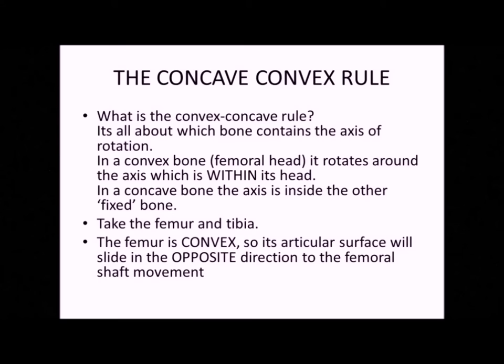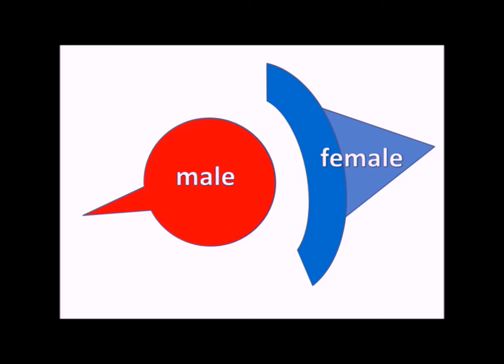So I thought I'd make a short video about the concave-convex rule, which could be quite a difficult topic to understand. The simplest way that I can explain this is to think about the axis of rotation, so I've got a few diagrams later on that hopefully will help.